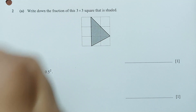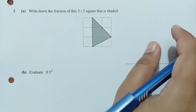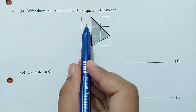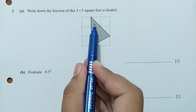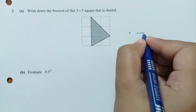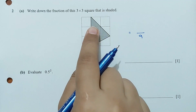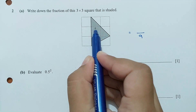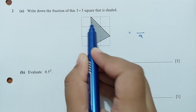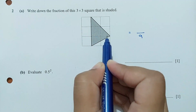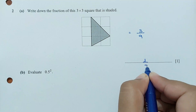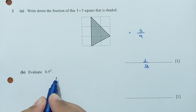Question 2 part A: write down the fraction of this 3 by 3 grid that is shaded. The total number of squares is 9. The shaded region consists of one complete square, two halves (making one whole), giving a total of 3 shaded. So the fraction is 3/9, which simplifies to 1/3.